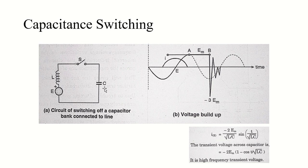As the capacitor is isolated from the source, it will retain this charge — it has no other way to discharge. Now at some instant B, approximately one half cycle later, the voltage across the switch will reach a peak value of 2EM. This voltage will reignite the arc and will cause oscillatory transients, as you can see here.